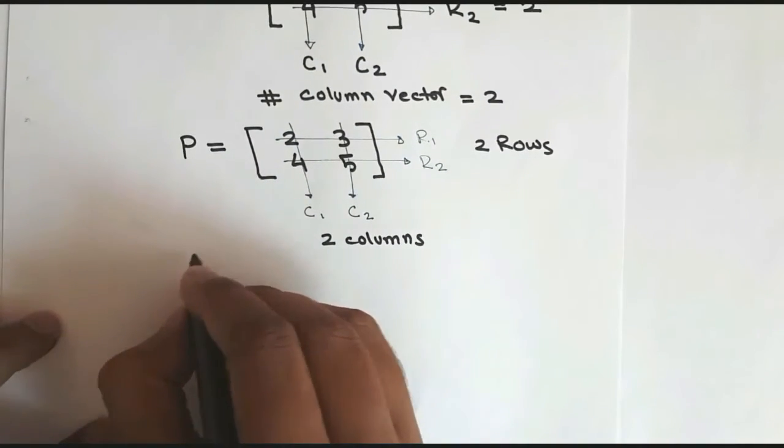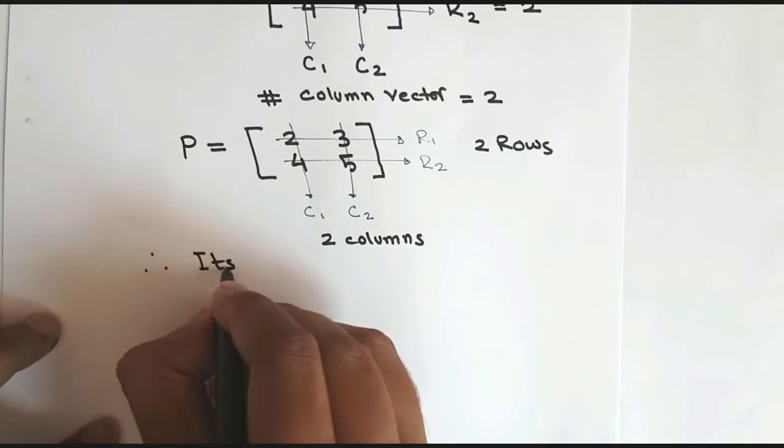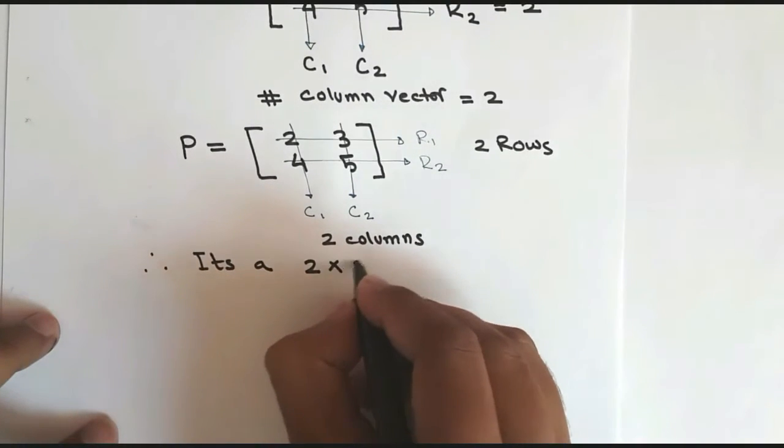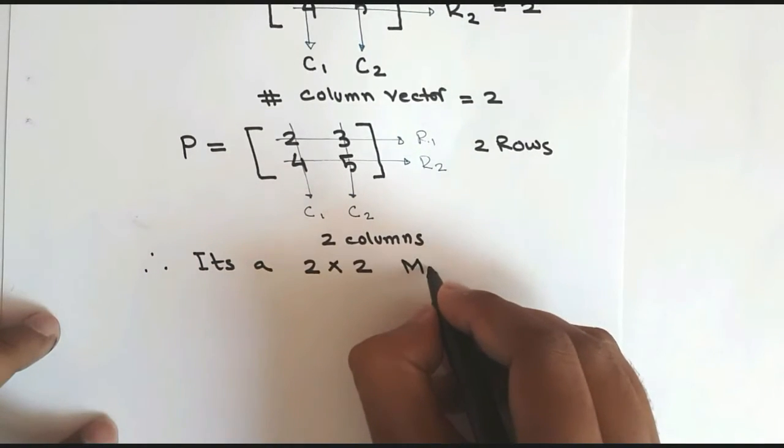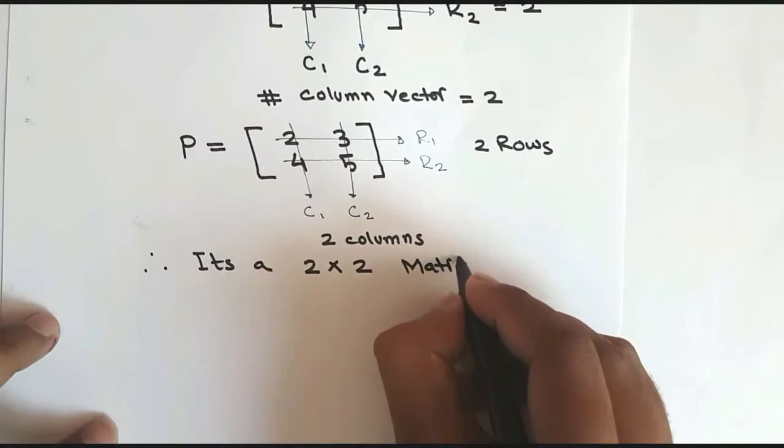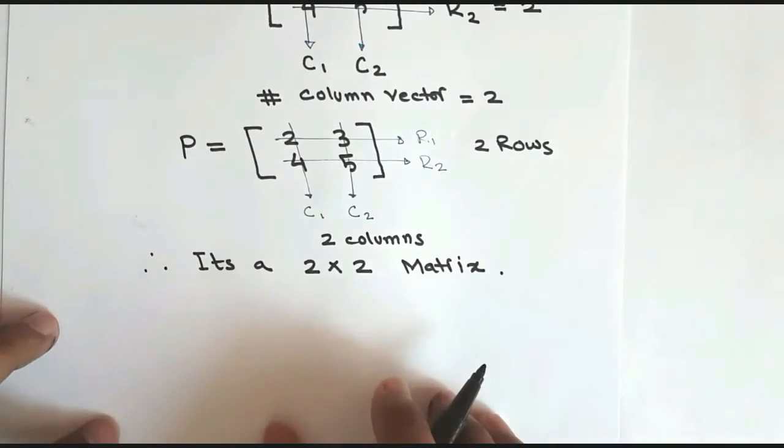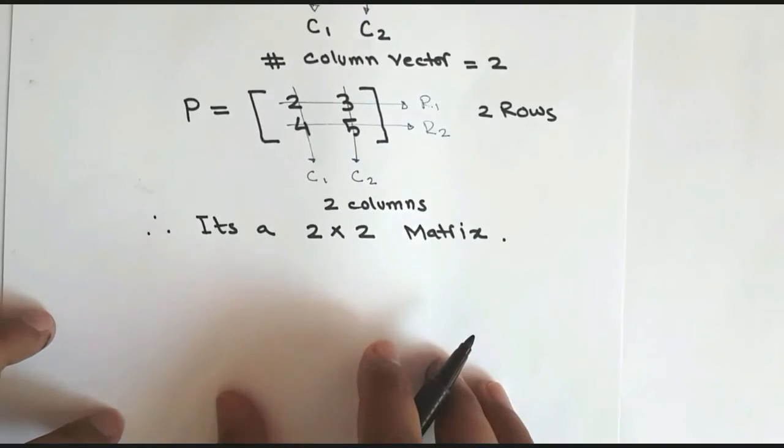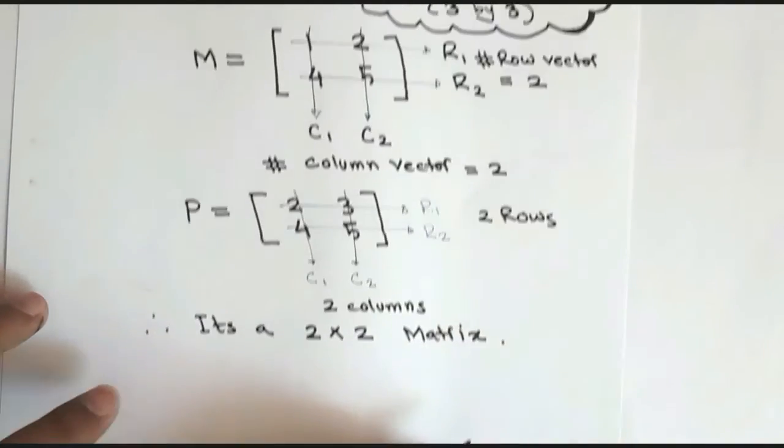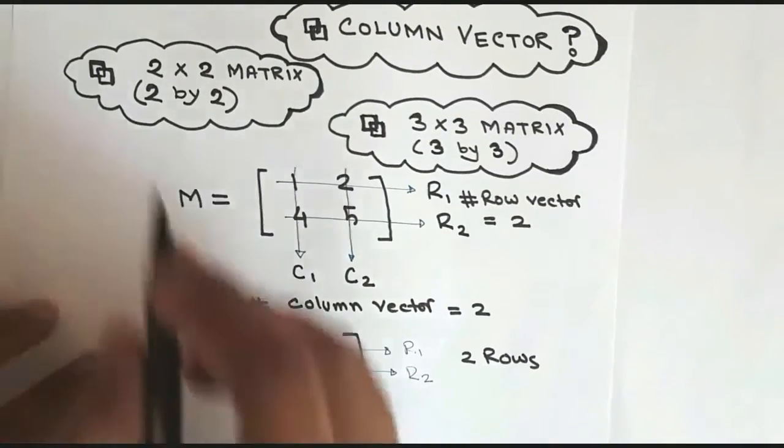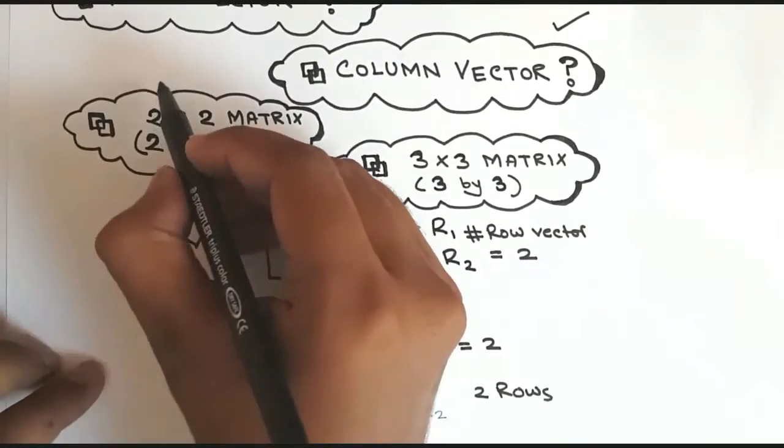So we have two row vectors and two column vectors, so this is our two by two matrix. It's really easy, it's like before. So we have two rows and two columns, so it's a two by two matrix.